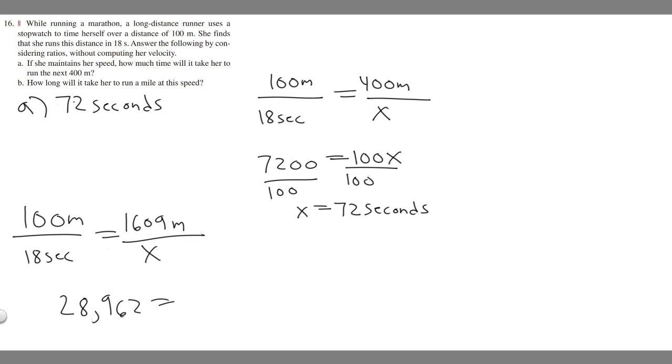So we multiply this across. Now we have to do 100 times x, so 100x. If you divide by 100, divide that number by 100, you're going to get that x equals 289.62.